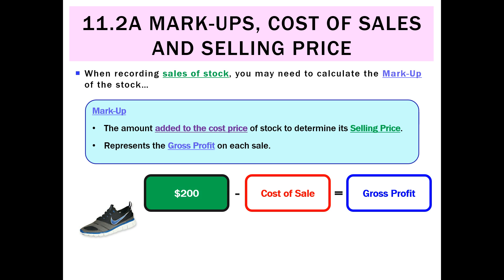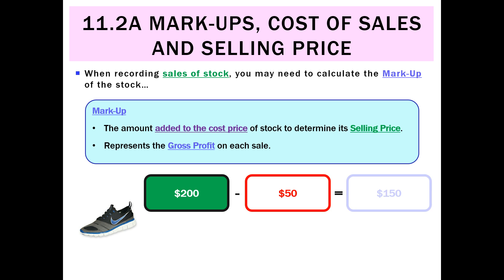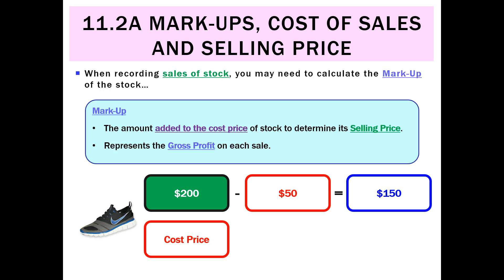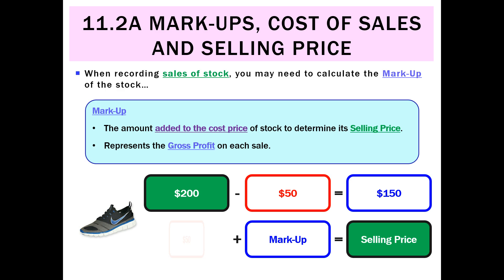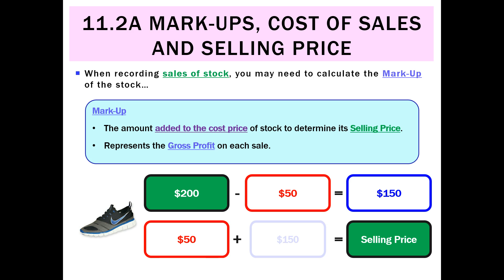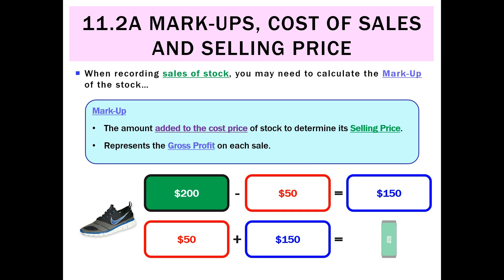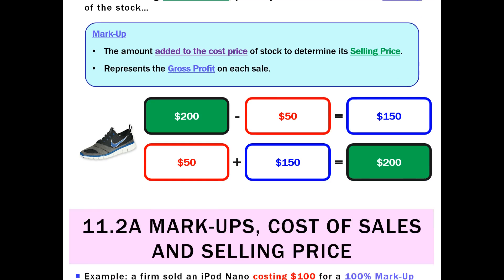If we sold a pair of shoes for $200 and they cost our business $50, we'd say the gross profit is $150, and that's also the markup — the amount added to the cost price. We can represent that as: cost price plus markup equals the selling price. In this case, $50 cost plus $150 markup equals a selling price of $200.